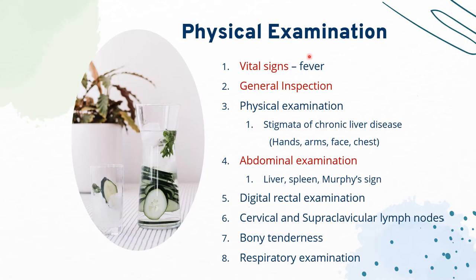For physical examination, we take vital signs such as temperature, pulse rate, respiratory rate, and blood pressure. In general inspection, look at whether the patient is alert and conscious, if they look cachectic, and for any evidence of jaundice such as yellowish discoloration of the skin, and evidence of leg swelling. Look at the hands for muscle wasting, Dupuytren's contracture, palmar erythema, and flapping tremor. Inspect the arms for bruises, ecchymosis, and scratch marks.